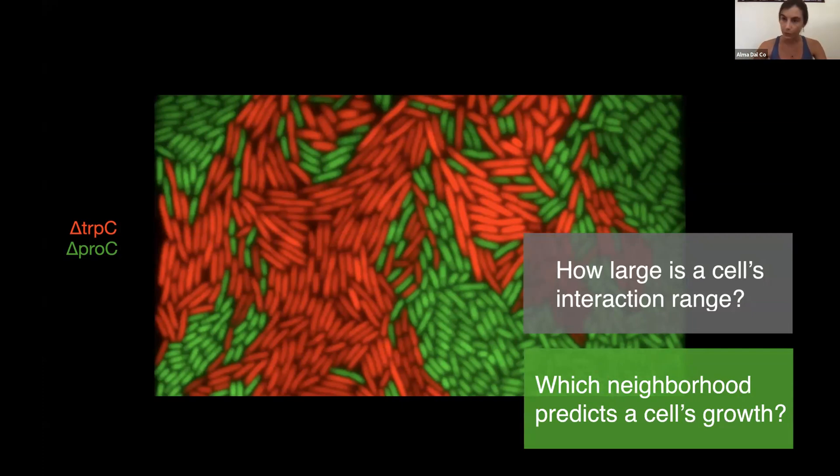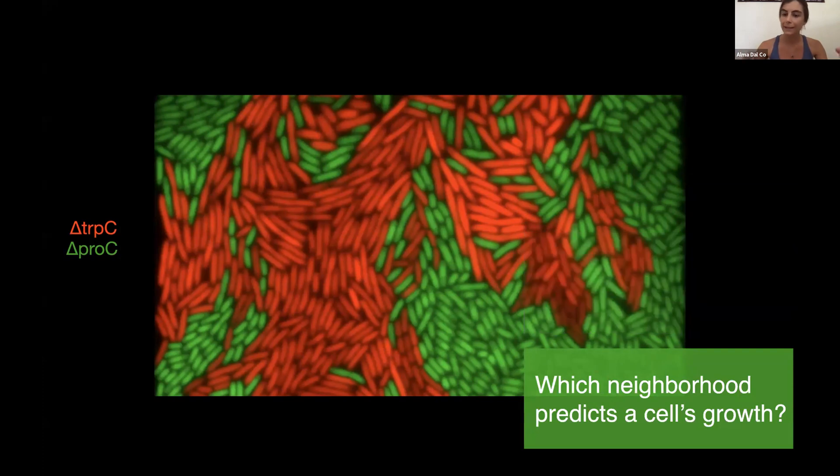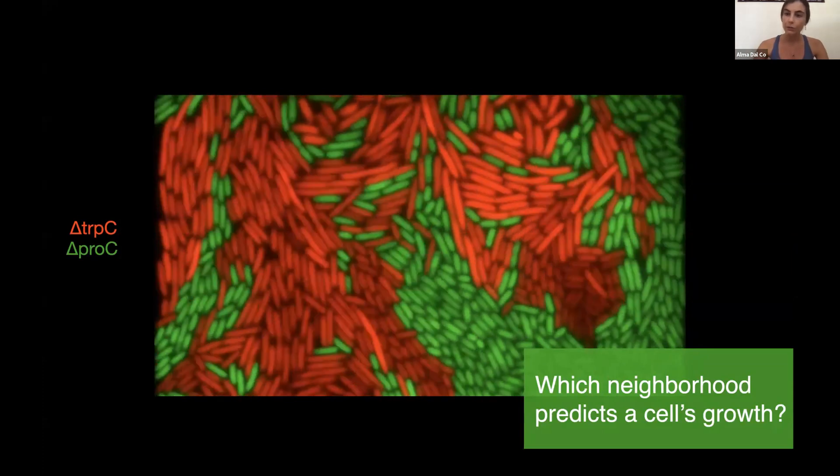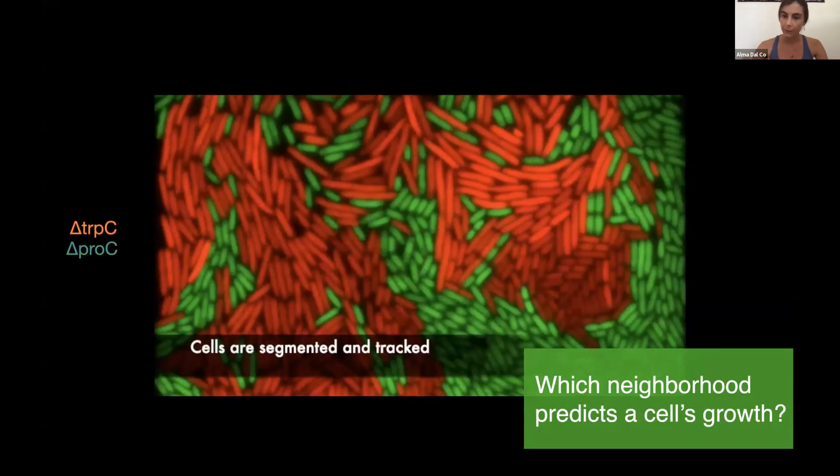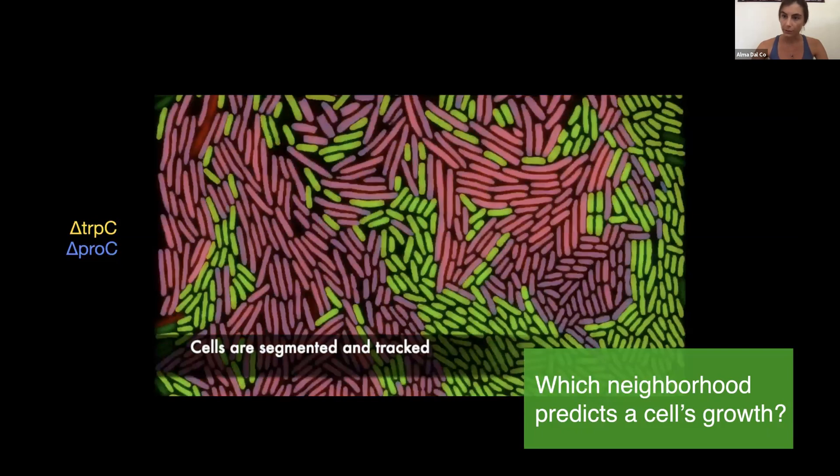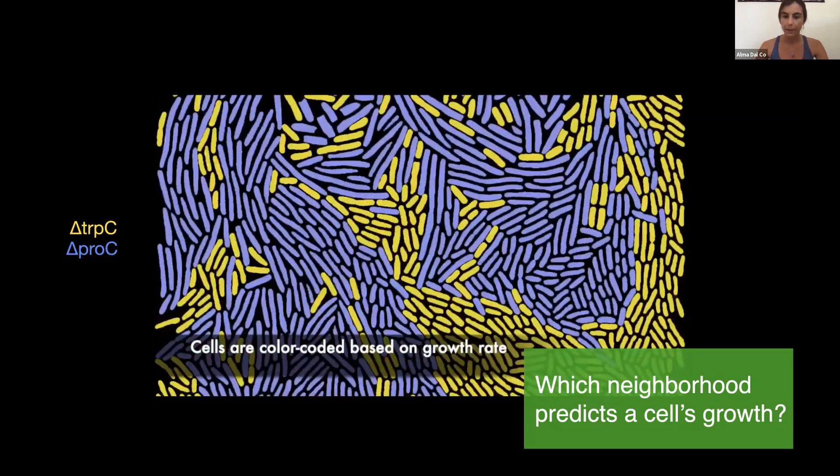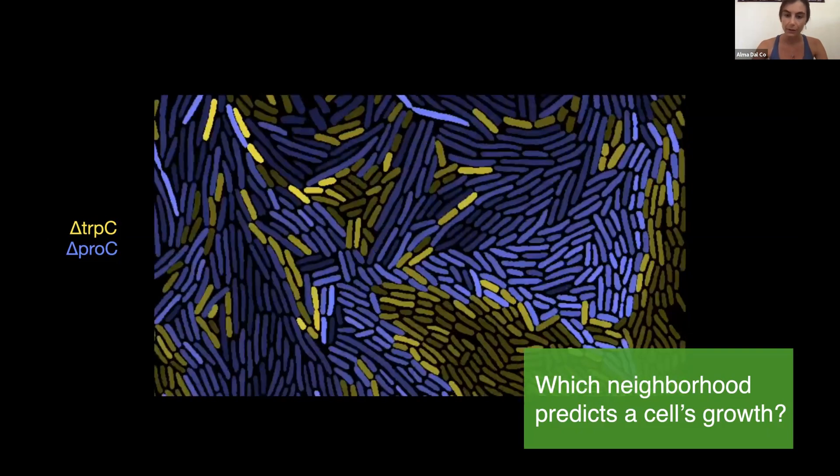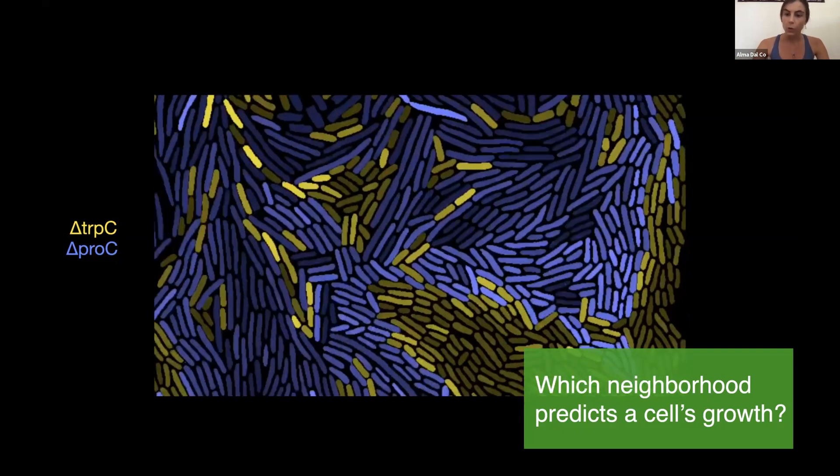To address this question we developed an analysis pipeline where we would identify single cells and measure their length in time to estimate the growth rate of the single cells. What you see here are growth rates of single cells depicted as a colormap. So brighter colors indicate faster growth rates of single cells.